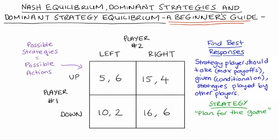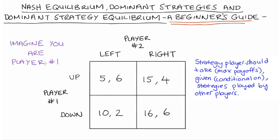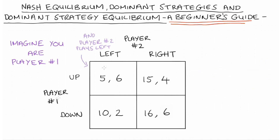To find our best responses, we imagine we're one player and evaluate the best strategy for every possible strategy the other player can take. Let's imagine we're player one and player two plays left — so we're on the first column, shaded in yellow. Player one could play up and get five, or play down and get ten. Ten is a higher payoff than five, so if player two plays left, player one's best response is to play down. I'm going to underline the ten to indicate that finding.